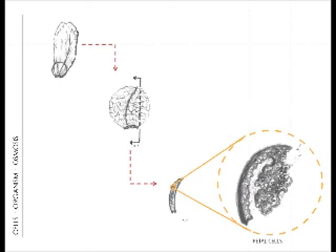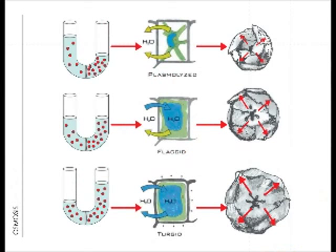As water moves into the cell, it expands, triggering a pressure which induces the flower petals to unfold its living hinge and absorb the warmth of the sun for pollination. As the water moves out of the cell, the loss of pressure relaxes the petals and the hinging motion closes for the organism's protection.